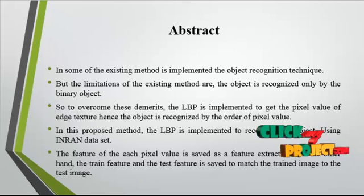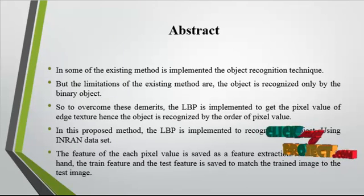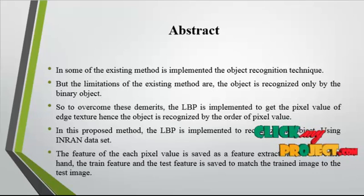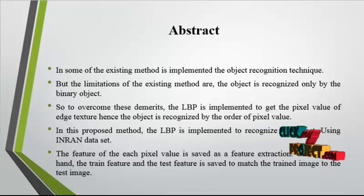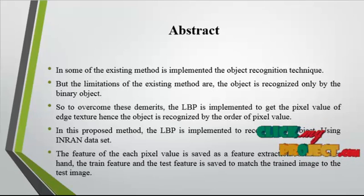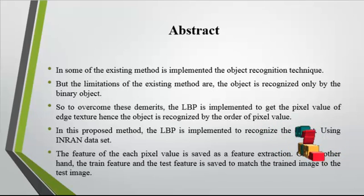Now we discuss the abstract for the process. In this paper, we propose two sets of novel edge texture features: discriminative robust local binary pattern (DRLBP) and ternary pattern (DRLTP) for object recognition, by investigating the limitations of local binary pattern, local ternary pattern, and robust local binary pattern (RLBP).